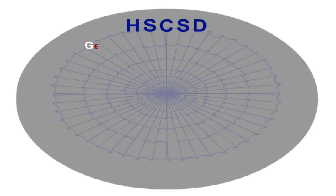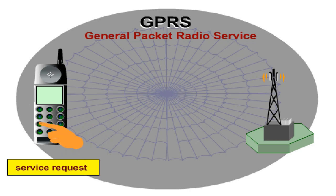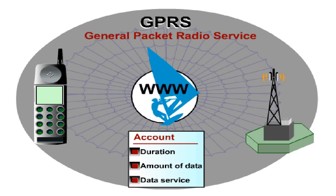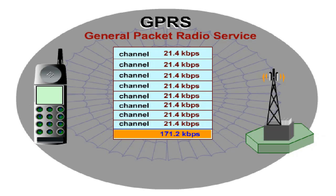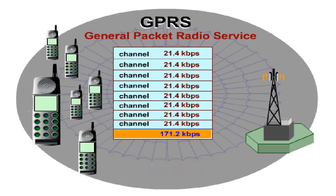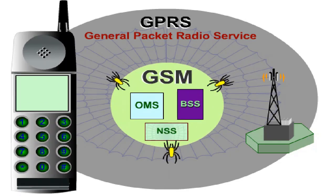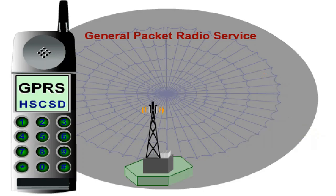In contrast to HSCSD, the General Packet Radio Service, GPRS, is packet switched instead of circuit switched. The radio network resources are only used if data is actually being transmitted. Thus, billing is no longer based on the duration of the call, but on the amount of transmitted data. Additionally, the type of data service can be charged, for example web browsing or WAP access. By bundling up to eight channels, a data rate of up to 171.2 kilobits per second can be achieved, with up to eight subscribers per channel. The more subscribers transmit data within a cell, the more the data rate available to each individual user is reduced. GPRS requires some modifications to the existing GSM infrastructure, and together with HSCSD, it is a further step towards mobile multimedia.